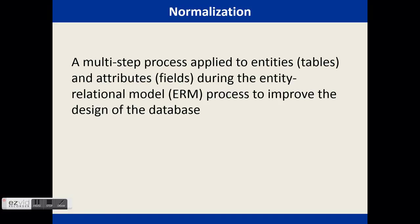Normalization can be applied to entities, which will translate into tables, and attributes, which will become fields during the entity-relationship model process, to improve the design of a database. Normalization is a multi-step process to ensure that all database tables are logically linked together and that all fields in a table relate to a primary key. Normalization helps create a database design that is highly flexible, meaning it is adaptable to change when additional entities, attributes, and relationships are needed — the model easily accepts new items. Normalization reduces data redundancy, resulting in better data and less storage needs.